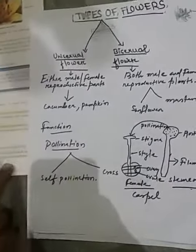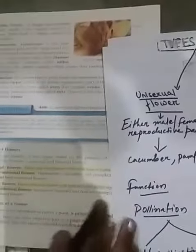In your book page number 7, unisexual flower and bisexual flower are given. After that, the function of flowers.